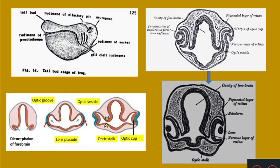When does eye development start? Eye development starts during the tail bud stage of the embryo. Around four days after fertilization, when the larva is around three millimeters long, it will develop a bud-like region called as the tail bud, and the eye development starts during this stage.